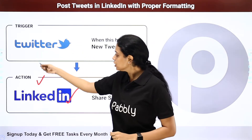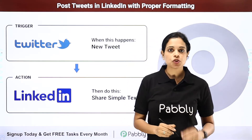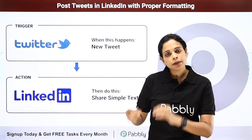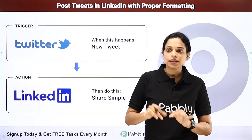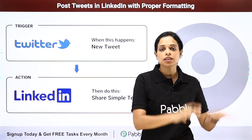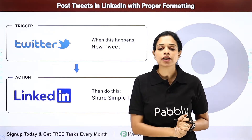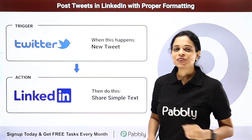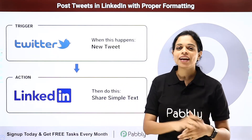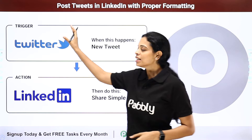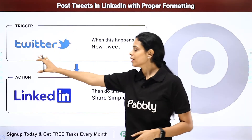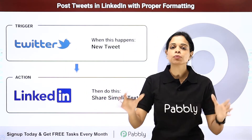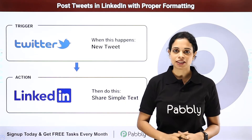The next one is — let's say there is a new tweet on Twitter, you have posted a new tweet, and you want the same tweet, instead of copying and pasting, to directly go on LinkedIn automatically. You will have to integrate these two applications — just make sure that trigger application is Twitter, action application is LinkedIn, use Pably Connect software and you are sorted.